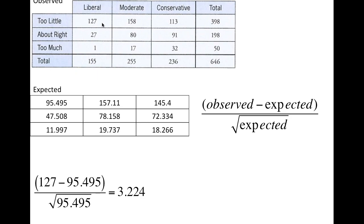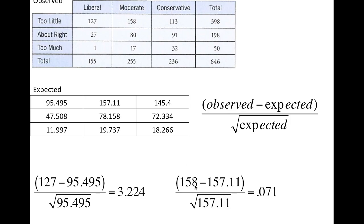We said that 127 compared to 95 is a fairly big difference. The next cell is 158 compared to 157.11 — those are much closer, so the residual is most likely going to be much smaller. If we do that one: 158 minus 157.11, divided by the square root of 157.11, the standardized residual is only 0.071 — an extremely small residual in this case.